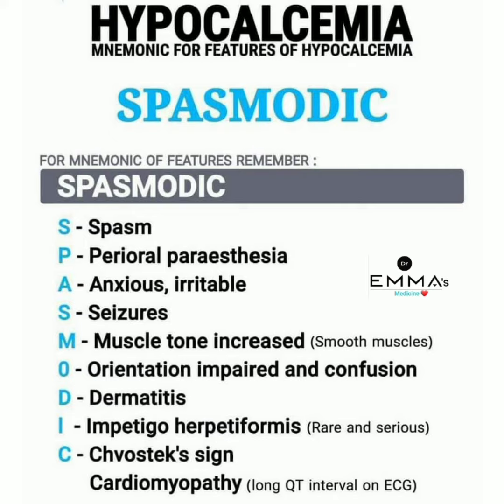Reviewing SPASMODIC: S for spasm, P for perioral paresthesia, A for anxious and irritable, S for scissors, M for muscle tone increased specifically in smooth muscles, O for orientation impaired and confusion, D for dermatitis, I for impetigo herpetiformis — a rare and serious condition — and C for Chvostek's sign and cardiomyopathy with long QT interval on ECG, which is present in hypocalcemia.